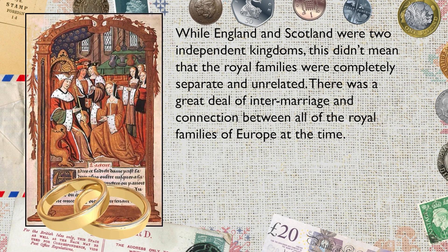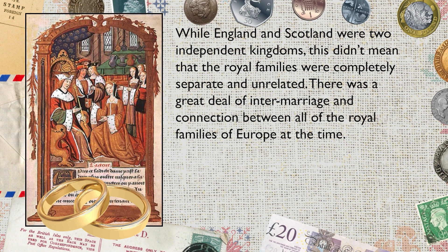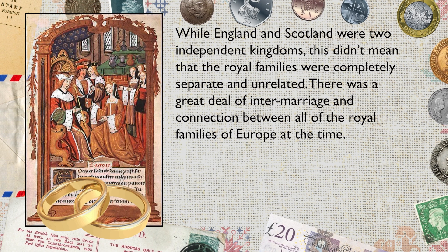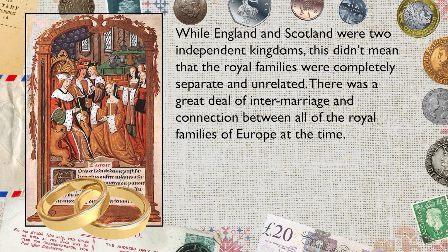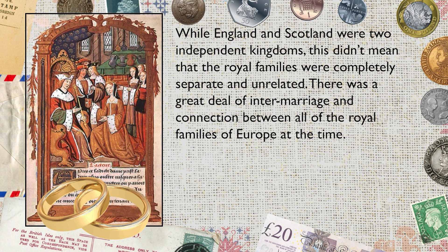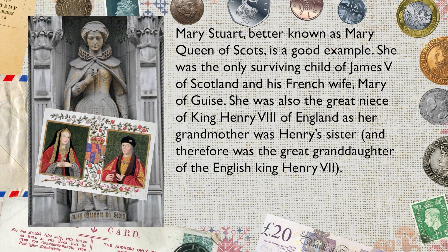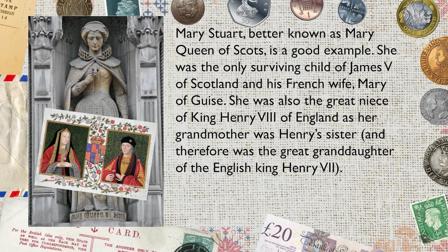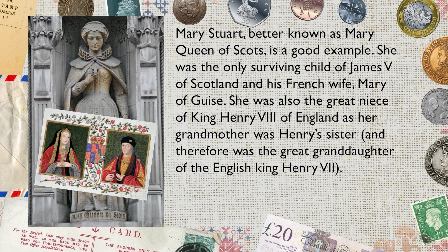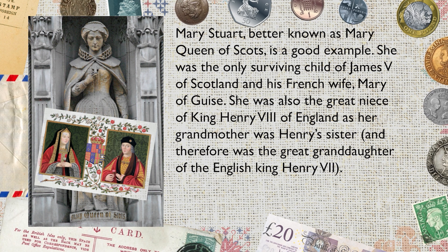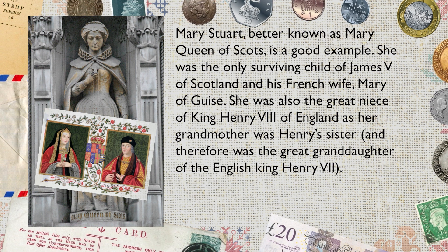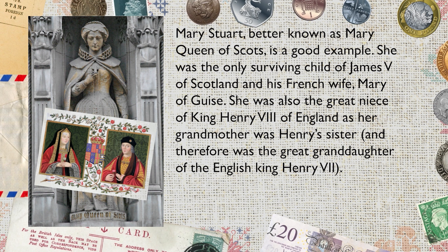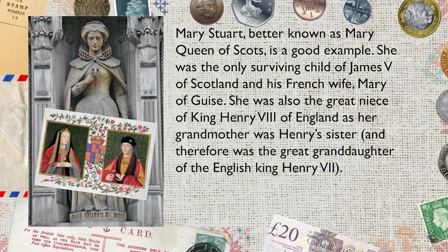While England and Scotland were two independent kingdoms, this didn't mean that the royal families were completely separate and unrelated. There was a great deal of intermarriage and connection between all of the royal families of Europe at the time. Mary Stuart, better known as Mary Queen of Scots, is a good example. She was the only surviving child of James V of Scotland and his French wife, Mary of Guise. She was also the great-niece of King Henry VIII of England, as her grandmother was Henry's sister, and therefore she was the great-granddaughter of the English king Henry VII.